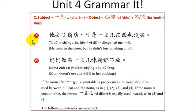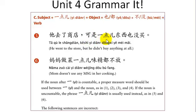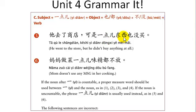Here's another example expressed by having a subject, then 一点儿, then an object, then either 也 or 都, or 不 or 没, and then a verb. 她去了商店，可是一点儿东西也没买 — she went to the store, but didn't buy anything at all.